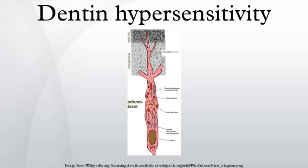The diagnosis of dentin hypersensitivity may be challenging. It is a diagnosis of exclusion, reached once all other possible explanations for the pain have been ruled out. A thorough patient history and clinical examination are required. The examination includes a pain provocation test by blasting air from a dental instrument onto the sensitive area, or gentle scratching with a dental probe. If a negative result occurs, another diagnosis should be sought, such as other causes of orofacial pain.